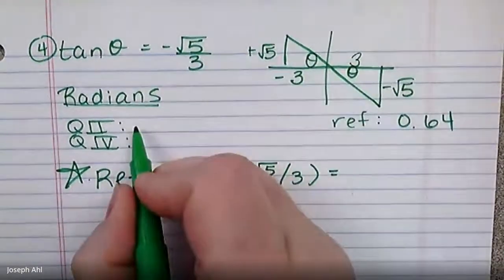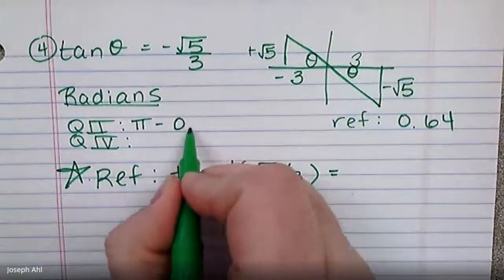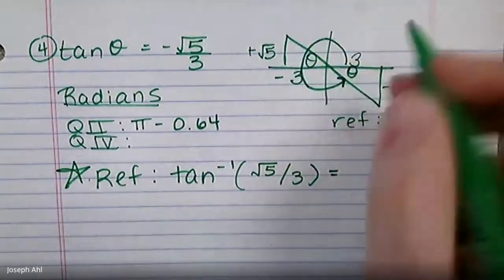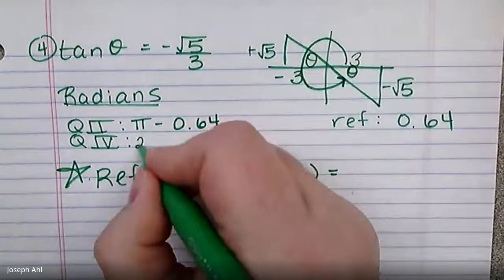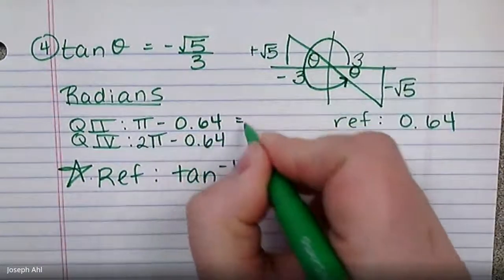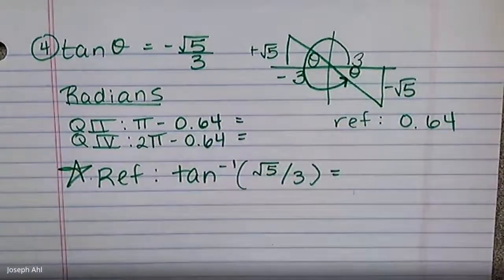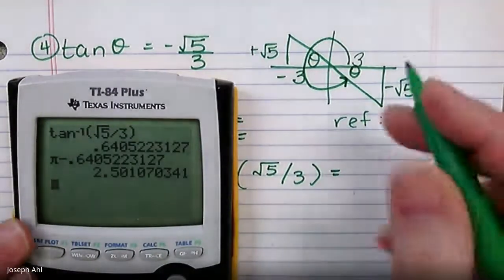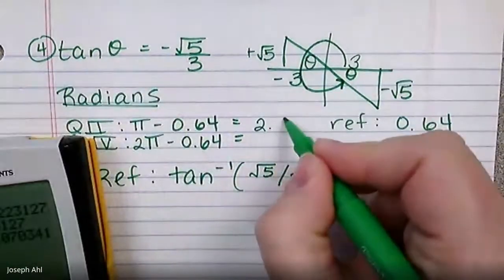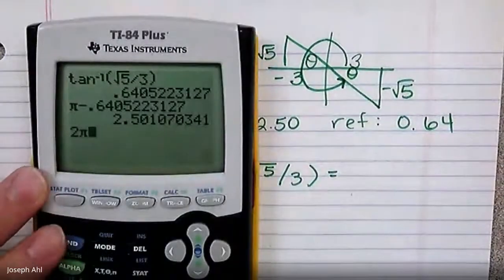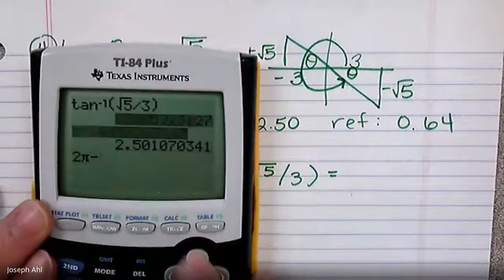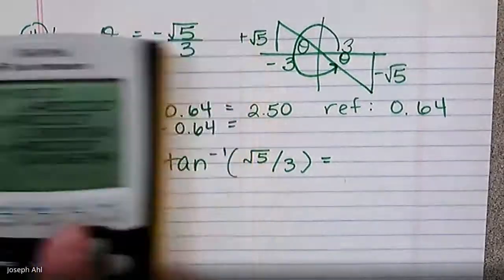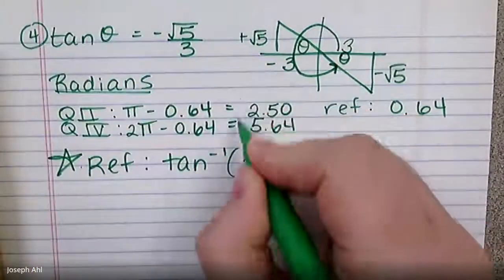So how do I get my quadrant two answer? We just did that a second ago. It's pi minus that reference angle. How do I get a quadrant four answer in radians? It's almost full circle, so we take two pi and subtract out that reference angle. That's what we're going to do to get my two answers in radians. Pi minus this is 2.50. And then two pi minus—just make sure you go back and get the reference angle. Don't do two pi minus the last answer. Two pi minus your reference is 5.64. So these would be the two answers if you are in radians.